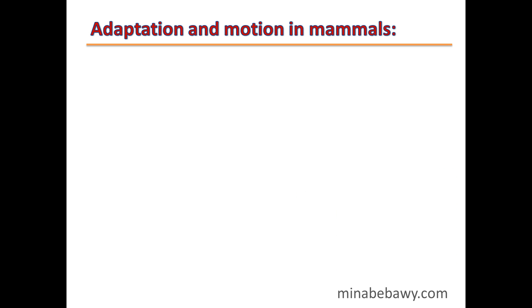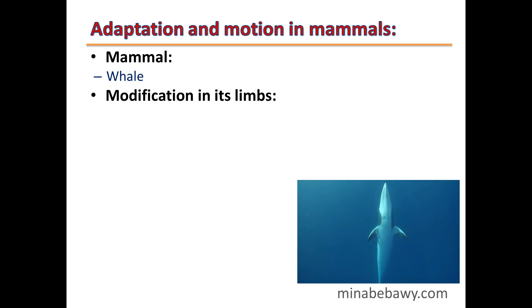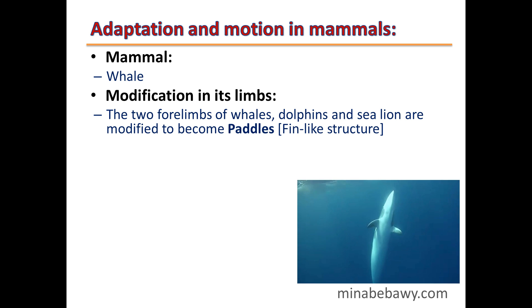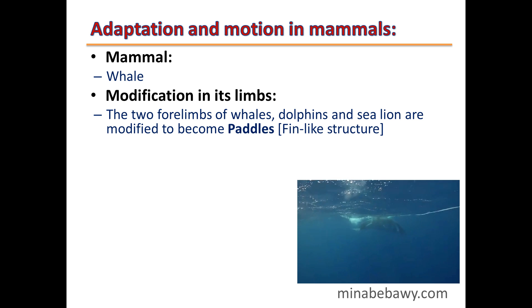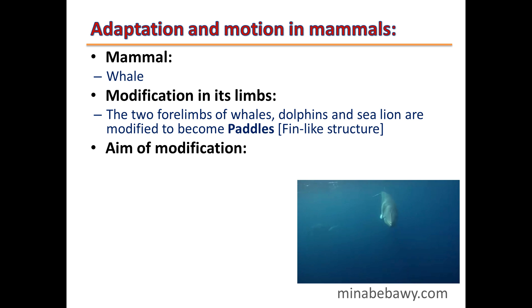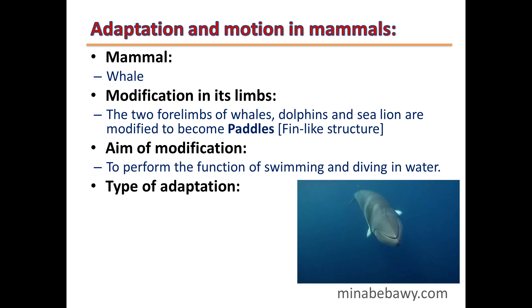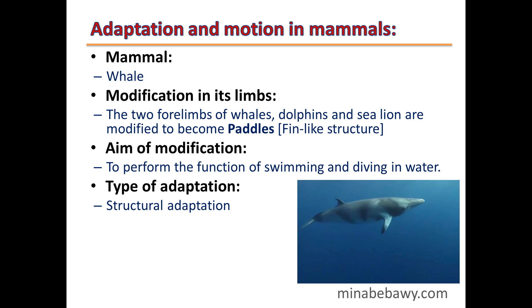Adaptation and motion in mammals – Example 1: Whale. The two forelimbs of whales, dolphins, and sea lions are modified to become paddles or fin-like structures. The aim of this modification is to perform the function of swimming and diving in water. Type of adaptation: Structural adaptation.